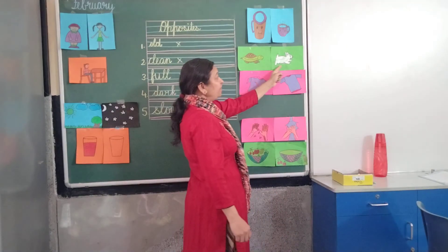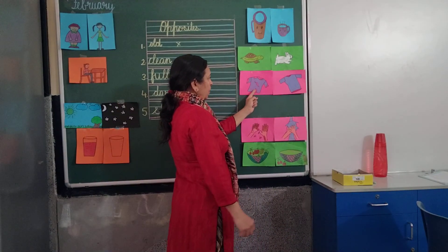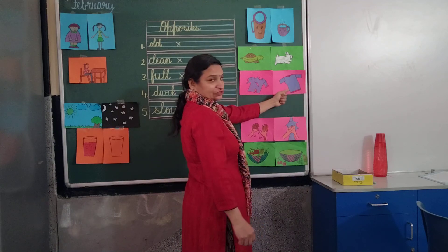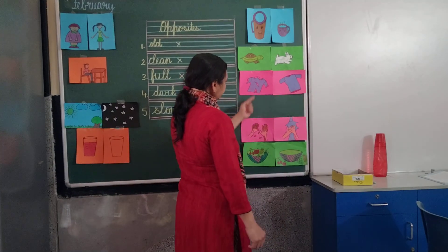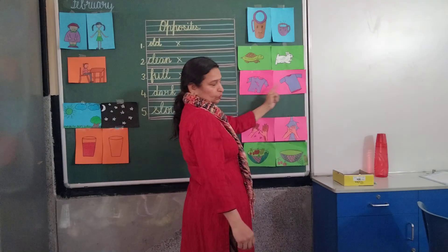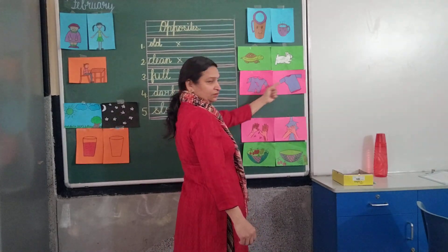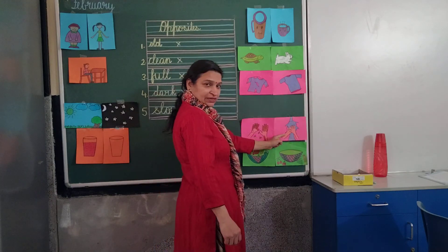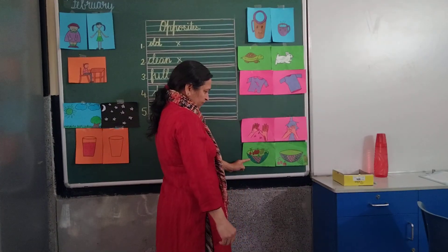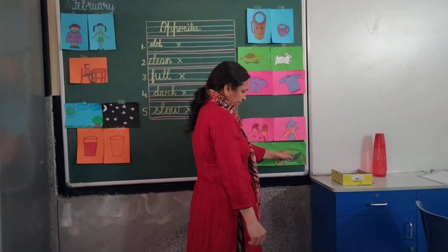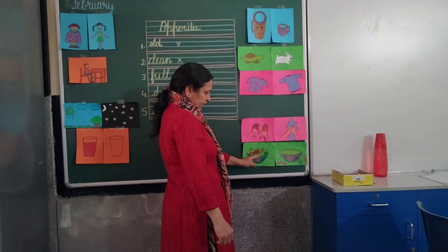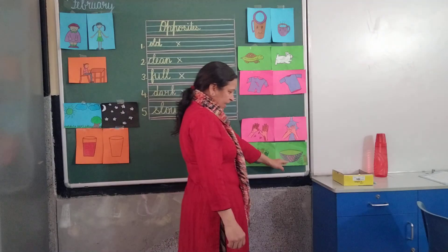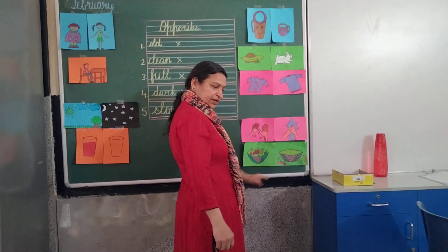Slow, fast. Now wet, dry or old, new — old, new. Then dirty, clean. Full, empty. In or out — see, fruits are in the basket and out of the basket.